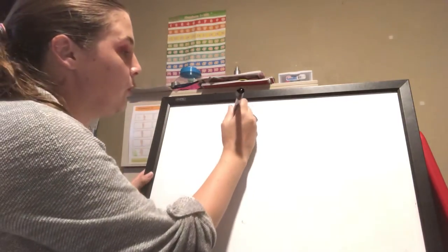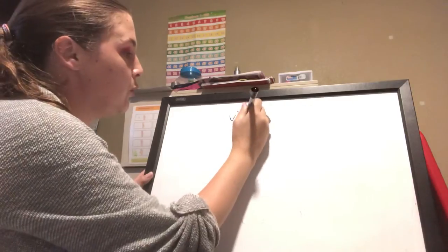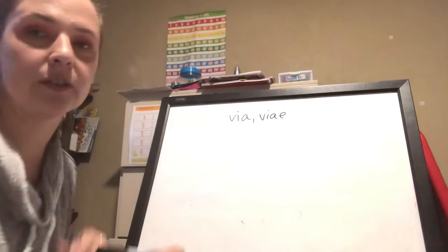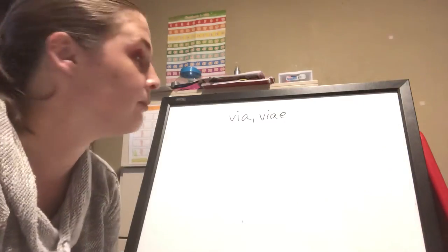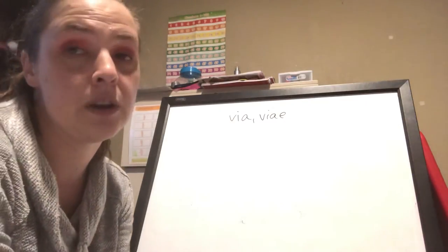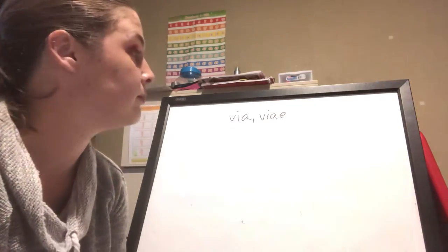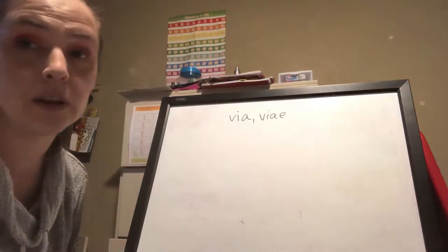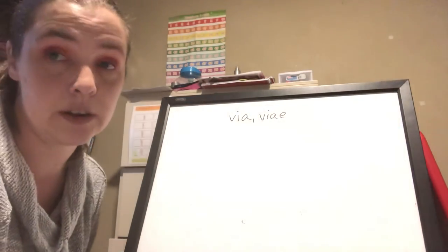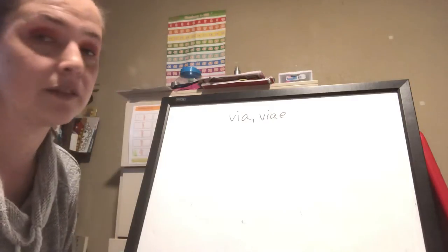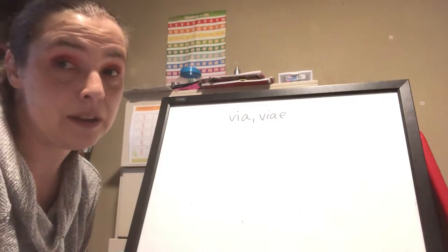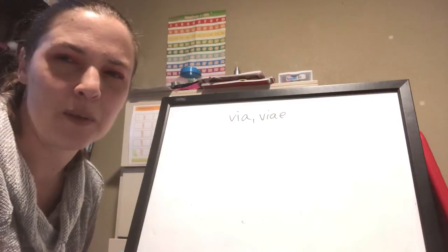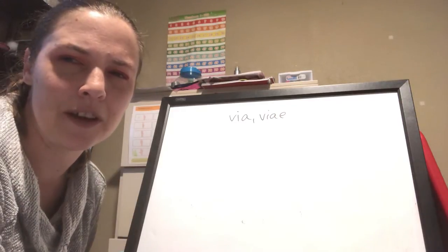We had the word via, viae. This is your word for roadway or path, and we know that it's feminine. It's first declension, and we are going to find our stem and tack on our endings, and then we can say we declined it.